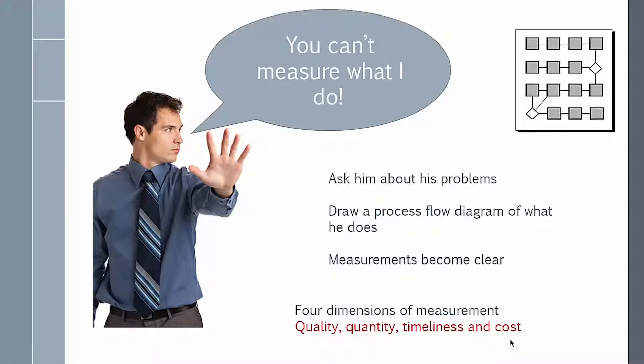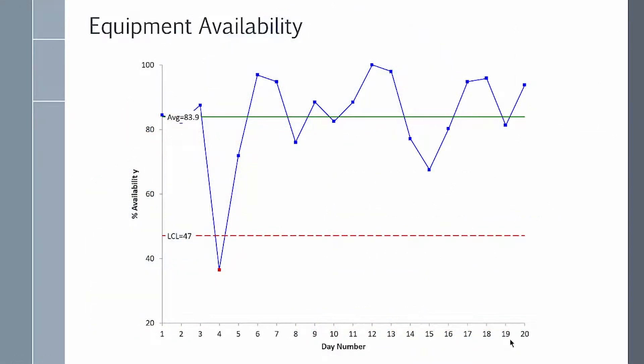Now let's look at some examples of control charts from our website. One example is equipment availability. This is where equipment is simply monitored for its uptime and percent of time that it's available. You can see from this chart, we have 83.9% average availability each day for this piece of equipment. And we have one out of control point on day four, a special cause of variation. Something happened that caused the downtime to be greater.